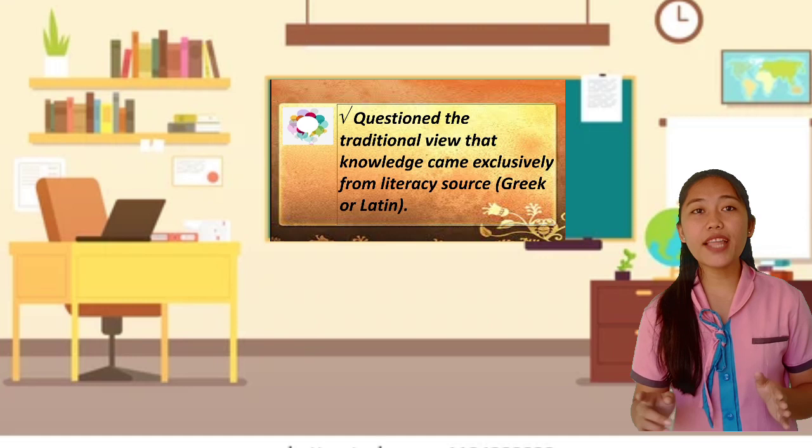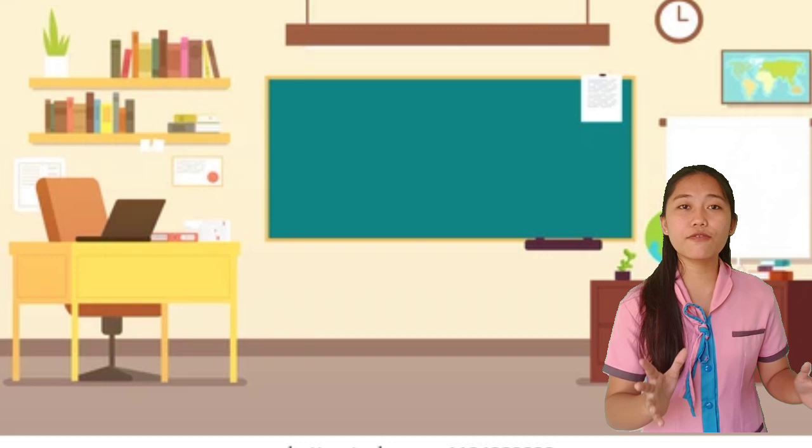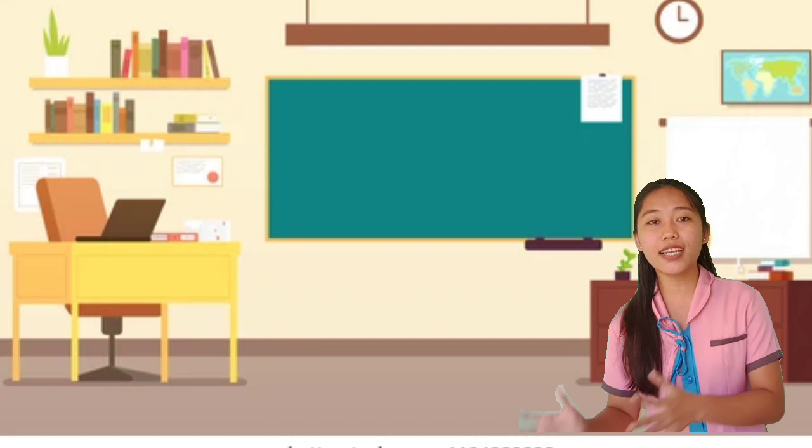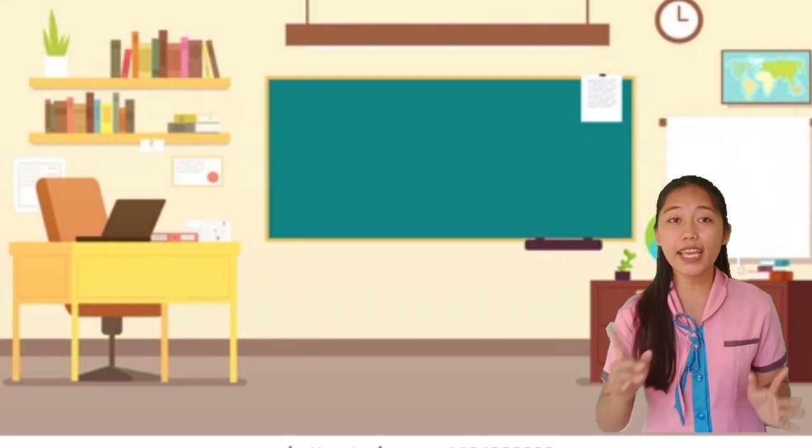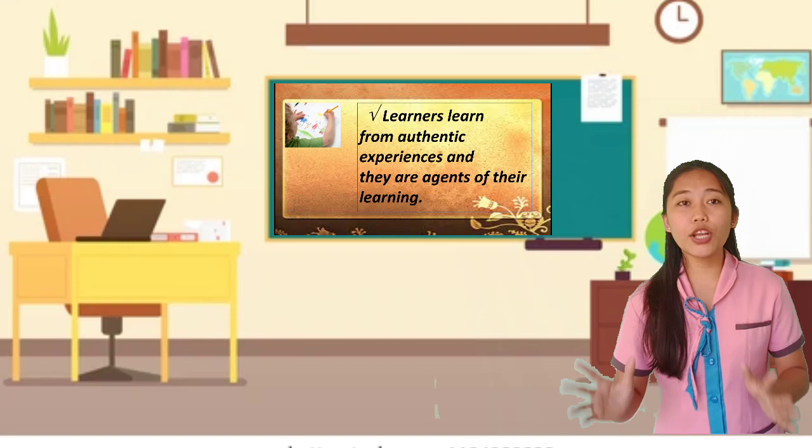Next question, the traditional view that knowledge came exclusively from literary sources, Greek or Latin. So, at a very young age, it is very easy for kids to learn something new. That's why it is so easy to teach kids new tricks. So, John Locke was not a fan of all the classics. Meaning he did not believe that all people learn only exclusively from literary sources, especially literary pieces of the classics, the Greek and the Roman.